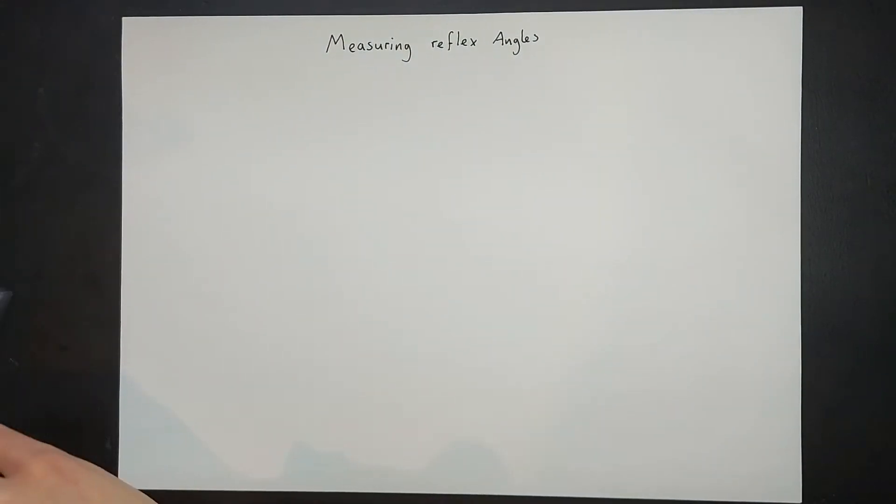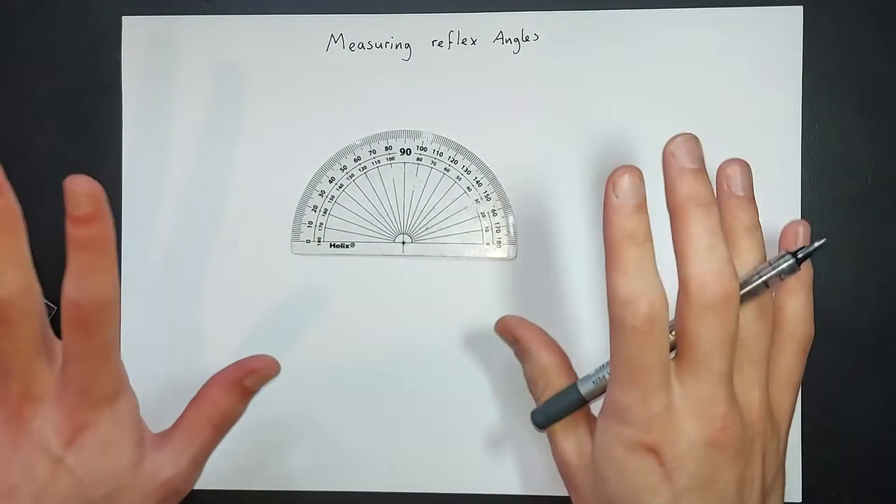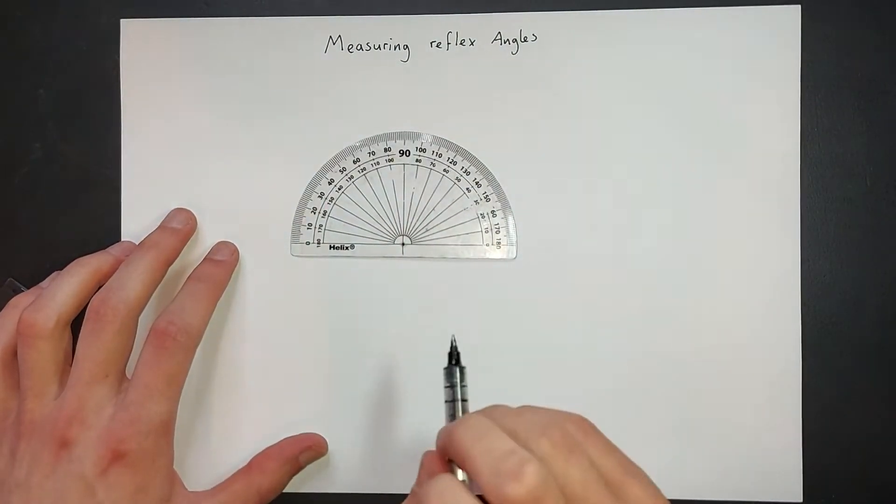You'll notice most of the time you can get full circle protractors, but most people have protractors that are semi-circle.